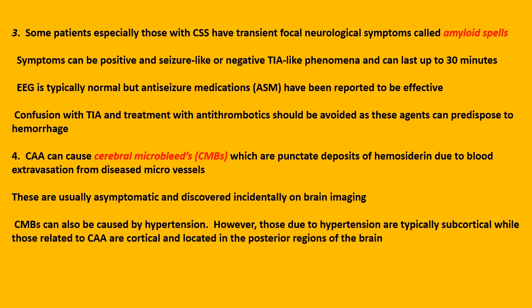Number three: some patients, especially those with CSS, have transient focal neurological symptoms called amyloid spells. Symptoms can be positive and seizure-like, or negative TIA-like phenomena, and can last up to 30 minutes. EEG is typically normal, but anti-seizure medications have been reported to be effective. Confusion with TIA and treatment with antithrombotics should be avoided, as these agents can predispose to hemorrhage.